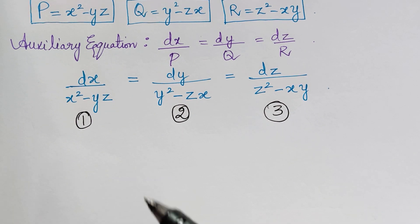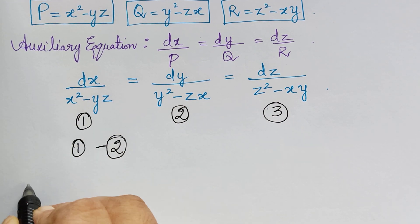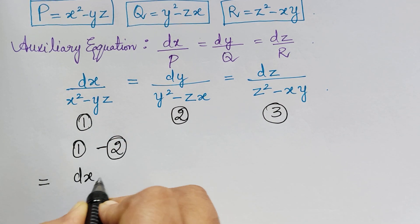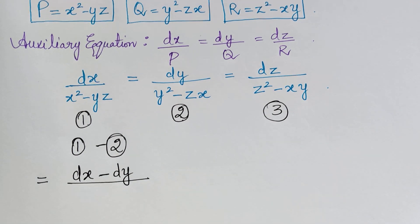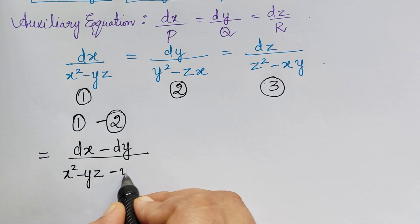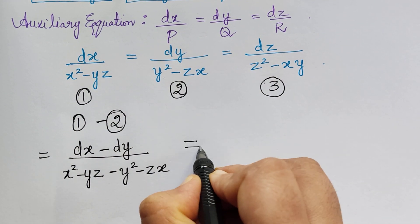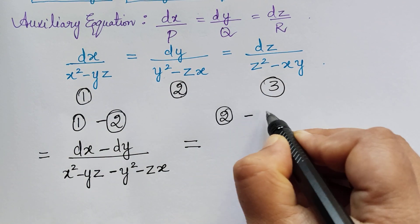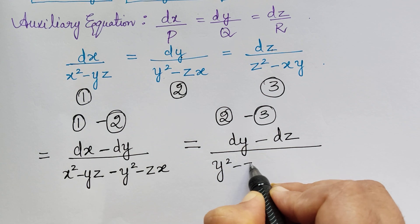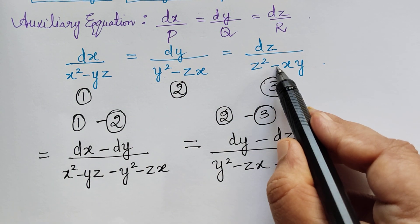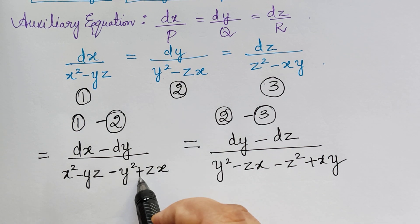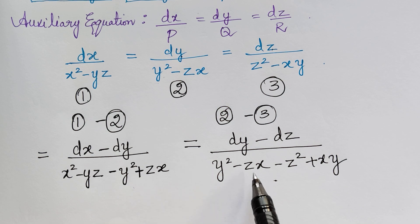First, we perform operation 1 minus 2. The auxiliary equation will also equal dx minus dy divided by x squared minus yz minus (y squared minus zx). Similarly, we perform operation 2 minus 3, giving dy minus dz divided by y squared minus zx minus z squared, where minus into minus becomes plus xy. Also, minus y squared with minus into minus gives plus zx.